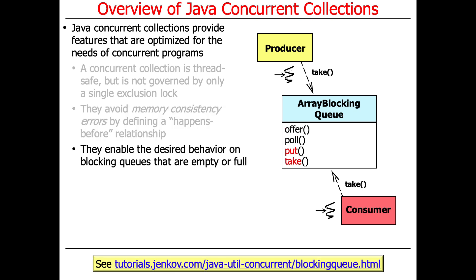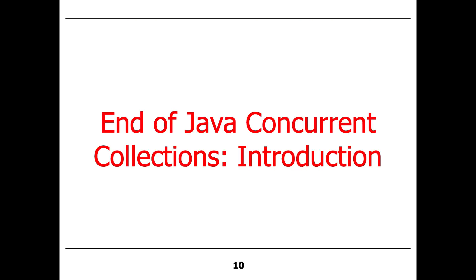A good example for the array blocking queue: you want to make sure that if somebody puts something into the queue, when someone else comes along to take it, the queue will no longer appear empty. Without happens-before guarantees, you could have strange inconsistencies where something is put in the queue but another thread can't find the item. That's a quick overview of concurrent collections — a lot of this will become clearer as we look at examples that illustrate concurrent collections in practice and show the benefits relative to the synchronized versions.